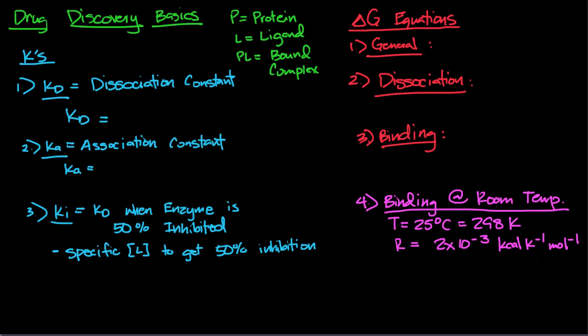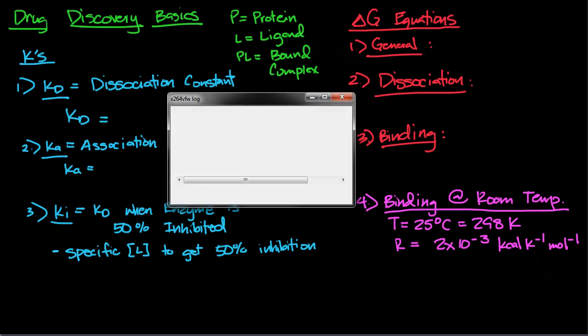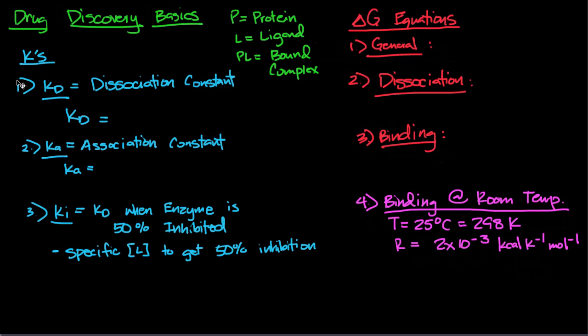Alright, drug discovery part one. We're going to start with going over the basics, just some of the terms you're going to see with drug discovery problems. First of all, we're going to define P, L, and PL. P is going to be our protein, generally a target enzyme or receptor that we want the drug to work on. L is going to be the ligand, the drug that we're actually developing. PL is going to be the bound complex once the drug binds the protein.